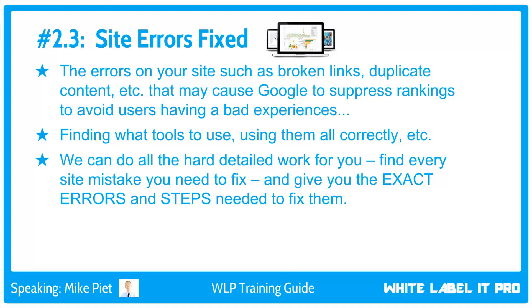We can find every single site mistake you need to fix and give you the exact specific errors and steps needed to fix them. Not just 'fix this' — but 'fix this thing here, here's a screenshot, here's why, here's how to fix it by putting XX code here,' etc. We're so specific that you or someone you give it to cannot help but fix them correctly. To make sure the site has no hidden errors preventing it from top positions, you can go to the homepage of whitelabelatpro.com, click on the site audit service, fill out the information, and we'll get back to you with a full site audit report.